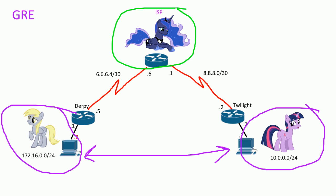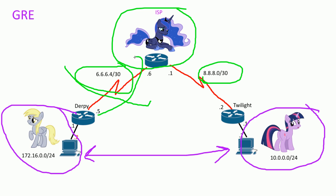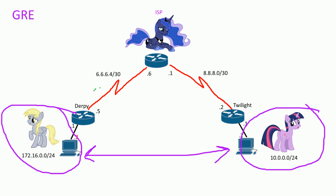Luna is kind of sad because she doesn't like being ISP — the other gal that was doing it was called in, so she had to manage all the routers for the ISP on the 8888.0 network and the 6664 network. These are spread out geographically, really like a big network. Derpy's connected to the public internet here and Twilight's connected to the public internet here, and they need a way of communicating with each other on their private networks.